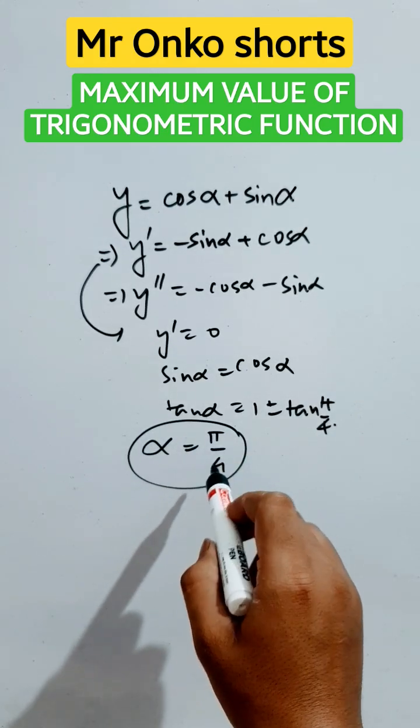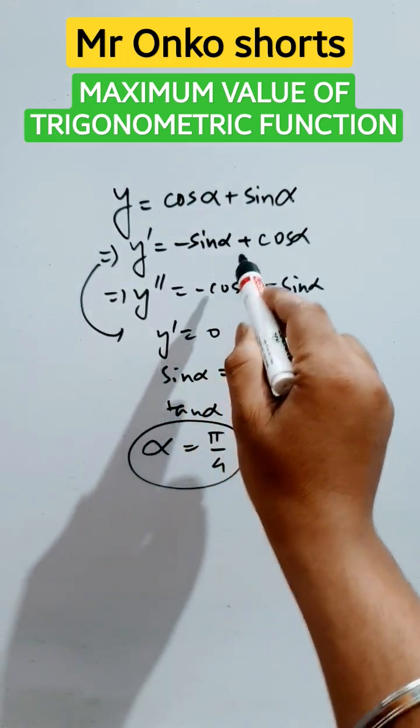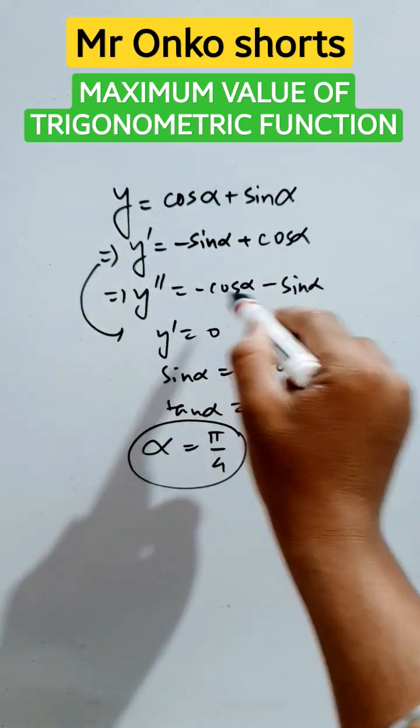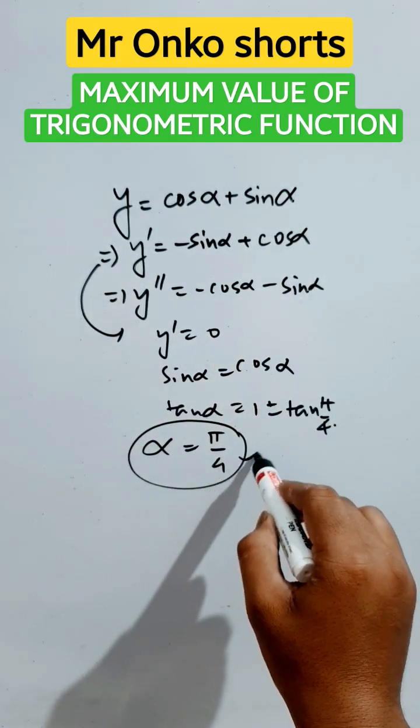So at pi by 4, y double dash will be minus 1 by root 2 minus 1 by root 2. It will be less than 0. So the second derivative is less than 0 for this value.